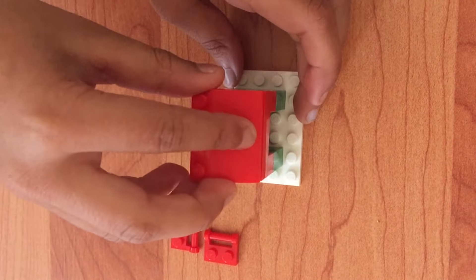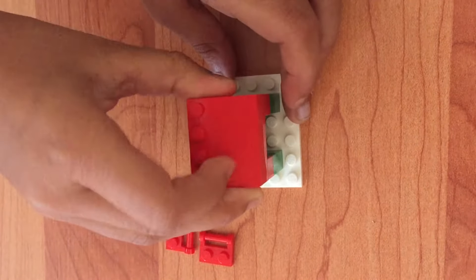So after that, I place this sliding part like this on the top of the roof of the mailbox.